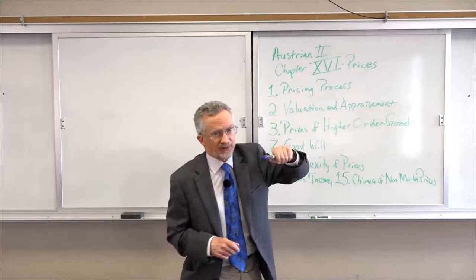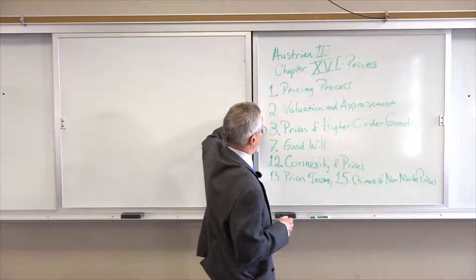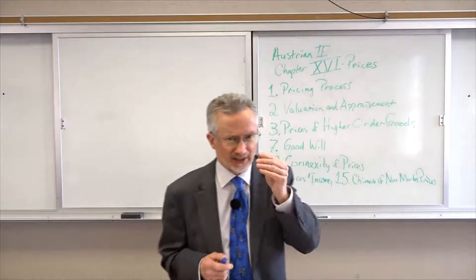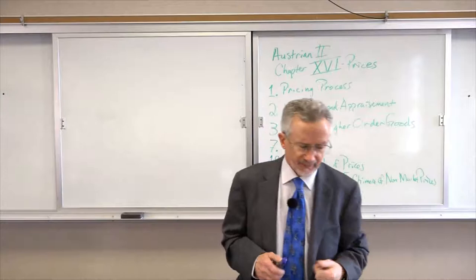Today I'm going to talk about Chapter 16 — there's some highlights and some very important stuff here. This is where Mises is really diverging from the neoclassical mainstream. I want to talk in particular about part one, the pricing process; two, valuation and appraisement; three, prices of higher order goods. Maybe a bit about the accounting section and then touch on goodwill, part 12 — connexity of prices; 13, prices and income; 15, the chimera of non-market prices.